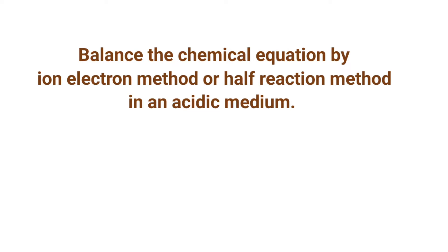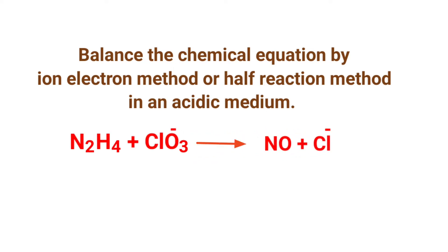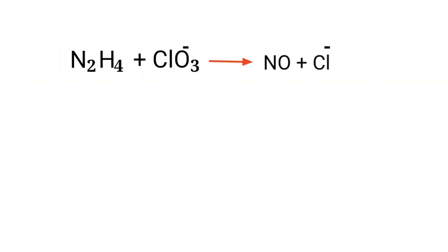Balance the chemical equation by the ion electron method, or half reaction method, in an acidic medium. The equation is: hydrogen plus chlorate ion gives nitric oxide plus chloride ion. In the ion electron method, one reaction is divided into two half reactions, which are then balanced separately and added together.